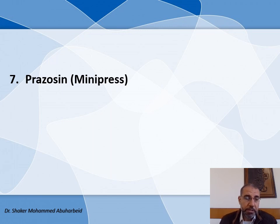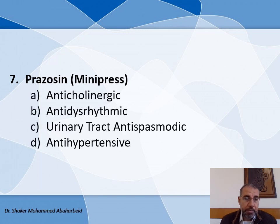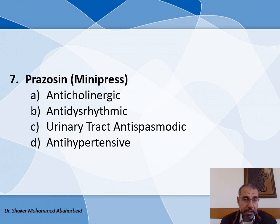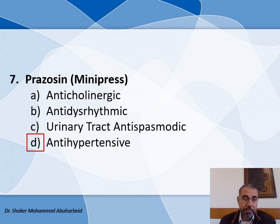Question number seven: Prazosin, with the trade name Minipress — the choices are: A) Anticholinergic, B) Antiarrhythmic, C) Urinary tract antispasmodic, and D) Antihypertensive. The correct answer is D, antihypertensive.